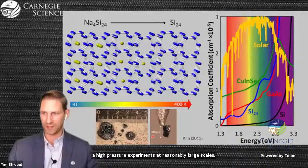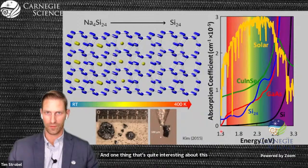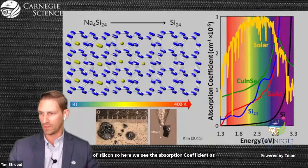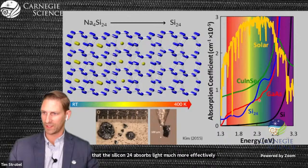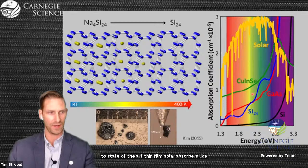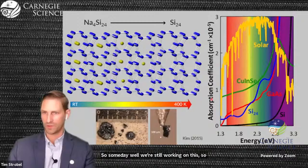One thing that's quite interesting about this particular allotrope of silicon is that it absorbs light much better than the normal diamond cubic form of silicon. The silicon-24 absorbs light much more effectively, somewhat comparable to state-of-the-art thin film solar absorbers like gallium arsenide or copper indium selenide. So someday, silicon-24 might be a useful solar energy material.